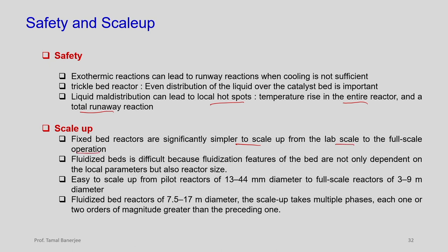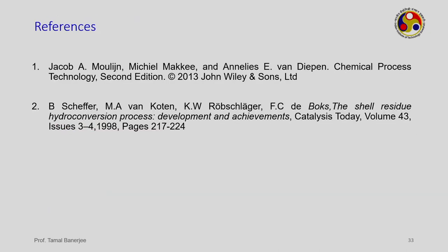Fixed bed reactors are simpler to scale up from lab scale to full scale operation. Fluidized beds are more difficult to scale up because fluidization features depend not only on local parameters but also on reactor size. Fixed bed pilot reactors of 13–14 mm diameter scale up easily to full-scale reactors of 3–9 m diameter, while fluidized bed reactors of 7.5–17 mm diameter require multiple scale-up phases, each one to two orders of magnitude greater than the preceding one.